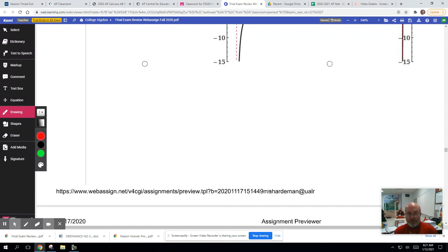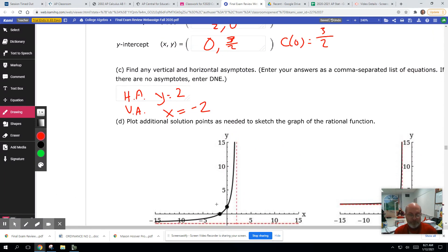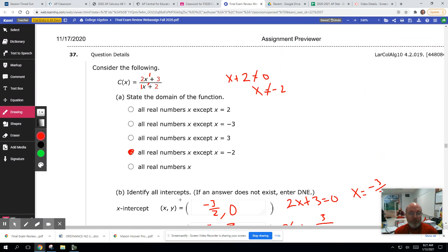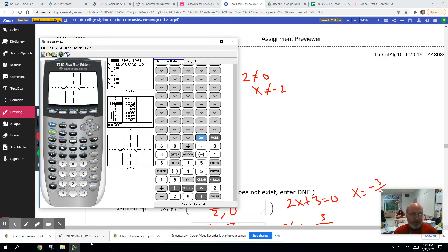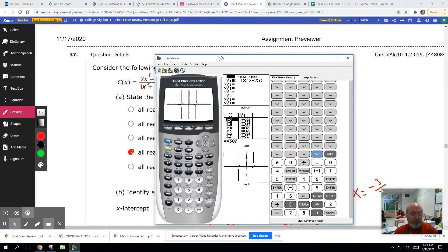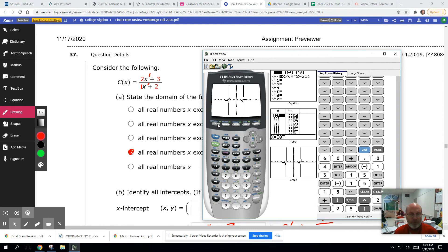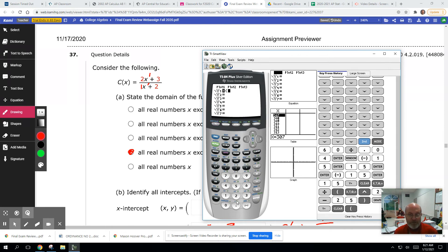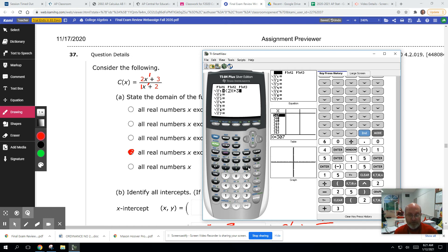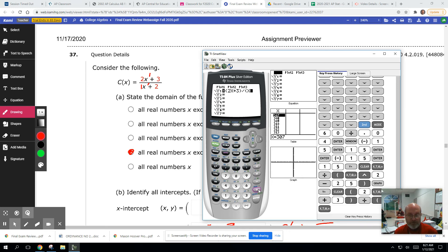We're going to graph this one now and see which one of these graphs will coincide with it. So I'm going to get the calculator. I'm going to graph y equals, looks like the window is the same as what we had before. So I'm going to put the numerator in parentheses because it's more than one term. 2x plus 3 divided by x plus 2 and graph.